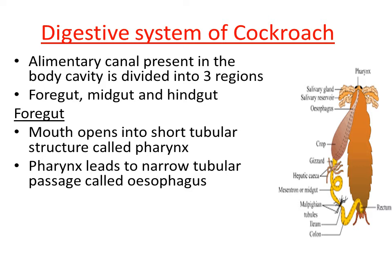Pharynx is followed by a narrow tubular passage called esophagus. The esophagus is also called the food pipe. Food is carried to the further part of the alimentary canal through this narrow tubular structure. Through the esophagus, food is passed towards the further part of the alimentary canal.